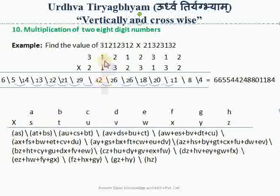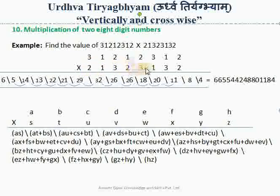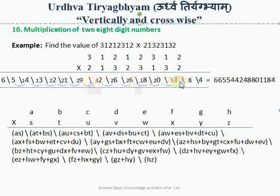Let us go through an example. Here we have taken 31212312 as our first number, and we shall multiply it with the second number 21323132, and we shall get the answer in a single line. I shall show you one by one how we use this formula to get these different values.